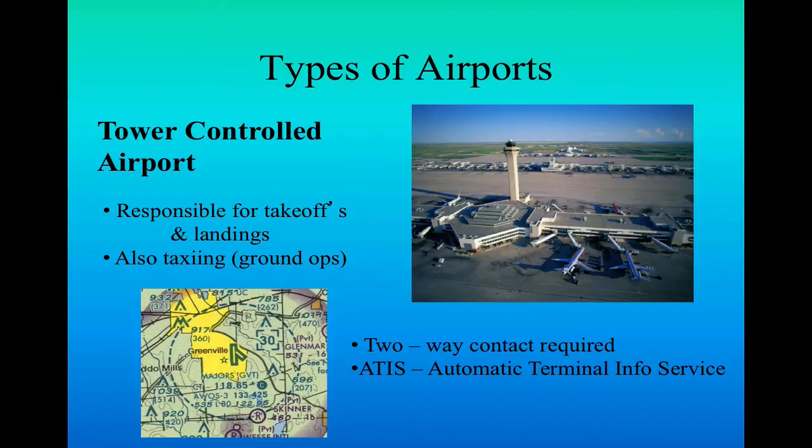We covered the details of different airspace requirements in our airspace lesson, so please review that. Two-way contact is essentially required to communicate with a tower. What that means specifically is that you address them and provide your aircraft's N-number — all U.S. registered aircraft have an N-number, a registration number. For example, you might say 'November 1 2 3 4 5.' When the tower calls you back using that N-number, two-way communication has been established. That exchange of N-numbers is the moment you know contact is established, and it's the only requirement to enter Class D airspace.